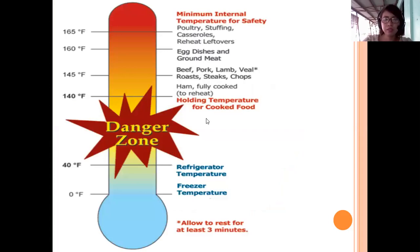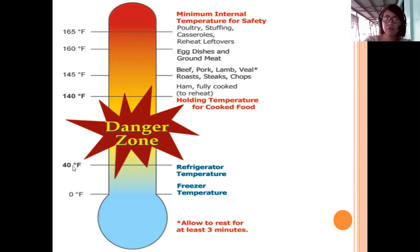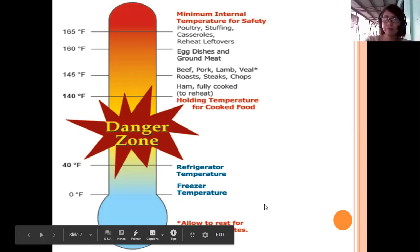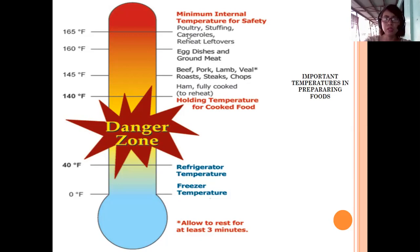Next is the measurement of heat or temperature. Are you familiar with the danger zone? The danger zone is from 40 degrees Fahrenheit to 140 degrees Fahrenheit — between them is the danger zone. Above 140 degrees Fahrenheit is the safe zone, and below 40 degrees Fahrenheit is also the safe zone. Important temperatures in preparing food: poultry, stuffing, and casseroles require 165 degrees Fahrenheit. Egg dishes and ground meat require 160 degrees Fahrenheit.